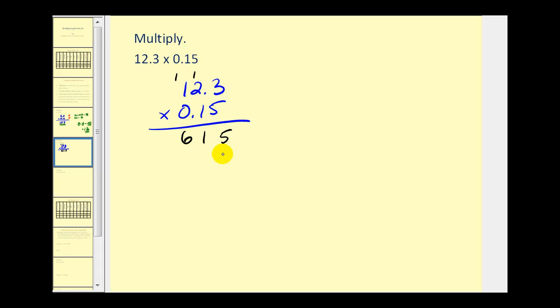For the next row, we'll add a zero here and then multiply by one. One times 3, one times 2, and one times 1. This should be reviewed when we multiplied whole numbers. Now we'll add: 5, 4, 8, 1.